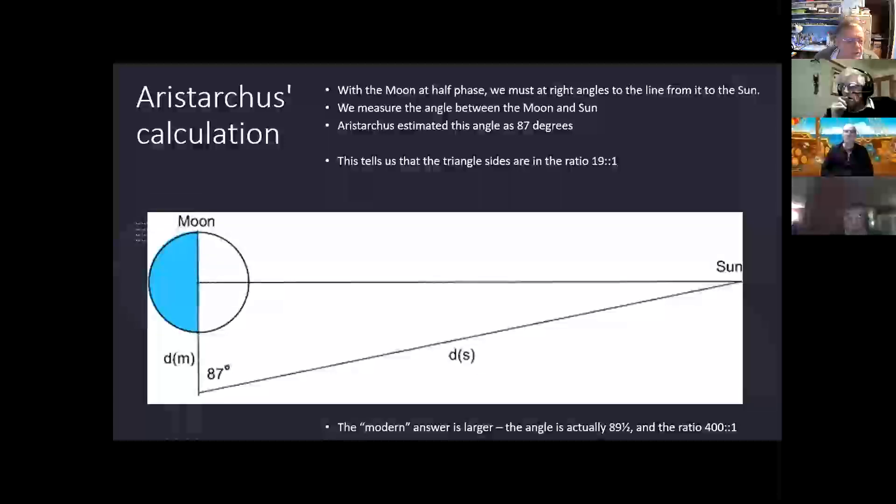Now, he wasn't exactly right about that. The angle he should have measured would have been 89 and a half degrees, very nearly 90, and the ratio would therefore be much bigger at 400 to 1, so the Sun is 400 times further away from us than the Moon is. But he got a ratio of, well, somewhere around 19 or 20 to 1.